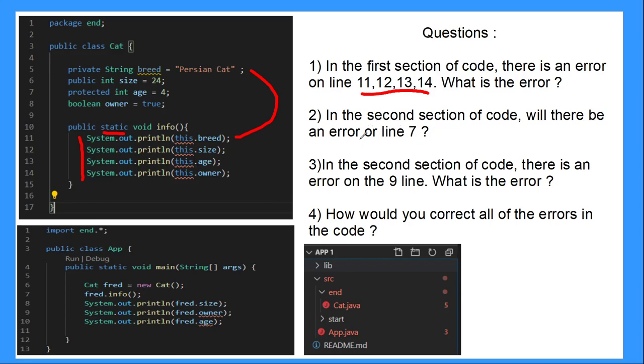In the second section, will there be an error on line 7? Because line 7 is calling this method and this method is then accessing those class properties. Will there be an error? Well, no, because what we've done here is on line 6, we've created that instance. So all of these properties have already been created and therefore these will be able to access them. So there will be no error on line 7.